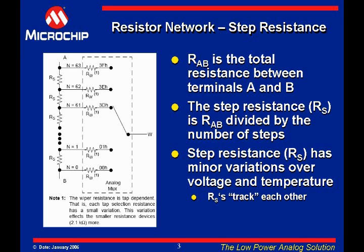Lastly, if the zero-scale position connects to a resistor RS and the full-scale position connects to a resistor RS, then there are 2^n + 1 positions.